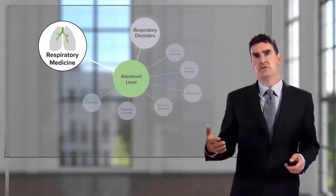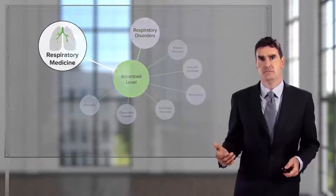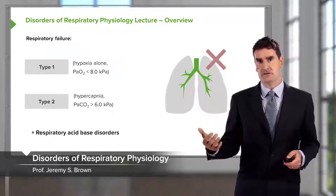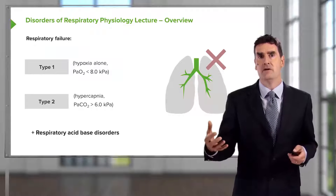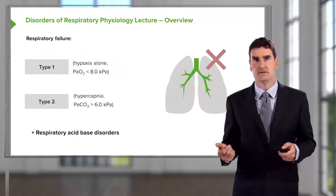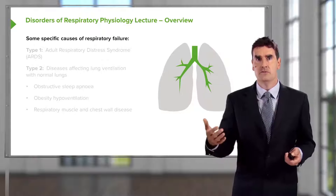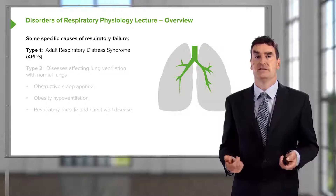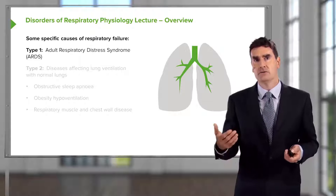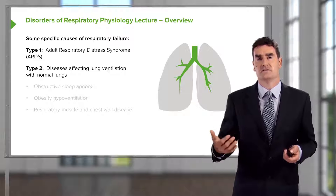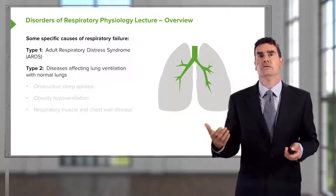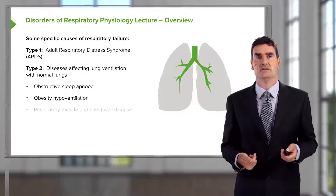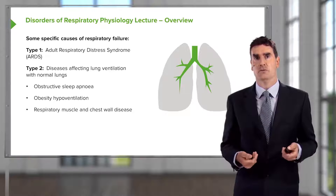The subject of this lecture is respiratory physiology disorders. We're going to talk about type 1 and type 2 respiratory failure, the differences between them and how they should be treated, a little bit about respiratory acid-base disorders, and then we're going to move on to talk about a specific cause of type 1 respiratory failure — the adult respiratory distress syndrome, ARDS — and also causes of type 2 respiratory failure which affect lung ventilation but the lungs themselves are normal, mainly obstructive sleep apnea, with some discussion of obesity hypoventilation and chest wall and muscle disease.